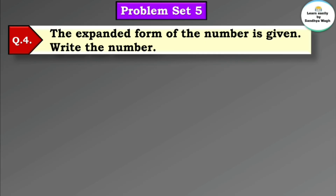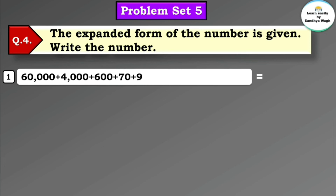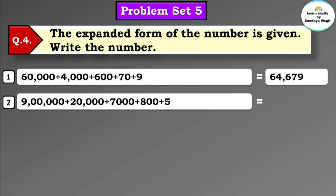Question 4: the expanded form of a number is given — write the number. First: 60,000 + 4,000 + 600 + 70 + 9. The answer is 64,679.